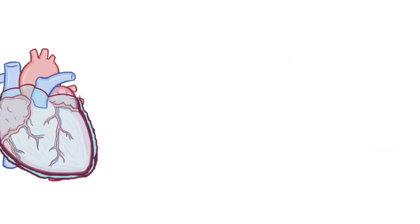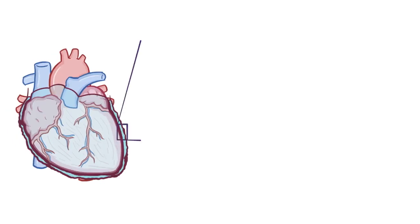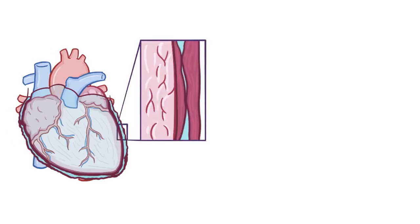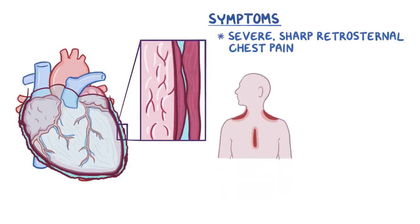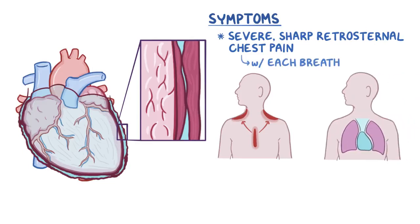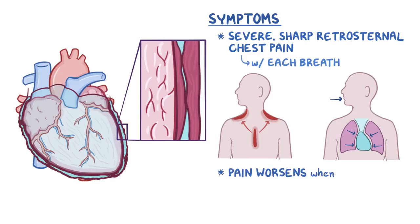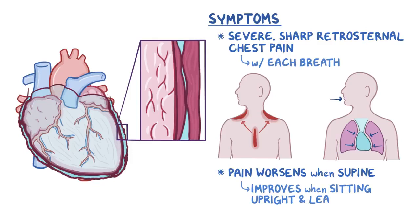In pericarditis, the two inflamed layers of the pericardium rub against one another every time the heart beats. This causes severe, sharp, retrosternal chest pain that radiates to the neck, shoulders, and back, and it typically happens with each breath during inspiration. That's because in inspiration the lungs expand, filling the thoracic cavity and compressing the pericardium. The pain typically worsens when a person is supine and improves when a person is sitting upright and leaning forward.